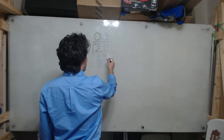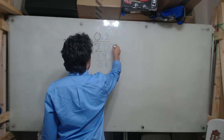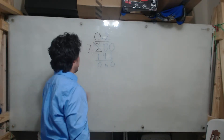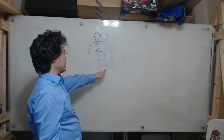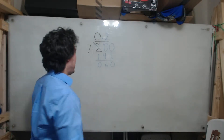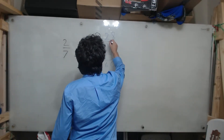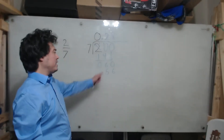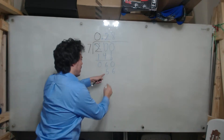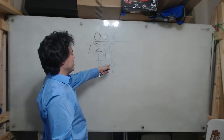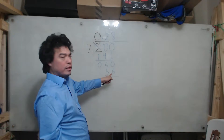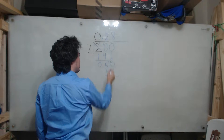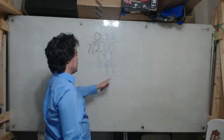Whenever we do the subtraction we affix another 0, but only one at a time. We bring this new 0 down and we get a 60 there. We ask ourselves how many times does 7 go into 60? The answer is 8, because 8 times 7 is 56. Then I ask what is 60 minus 56? 0 minus 6 I can't do it, so I borrow from this 6 — that becomes a 5 and this 0 becomes a 10.